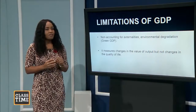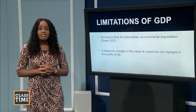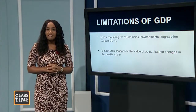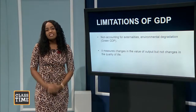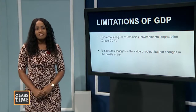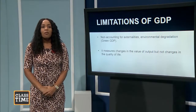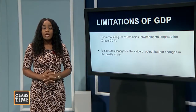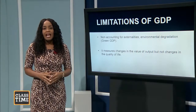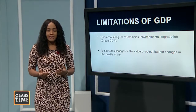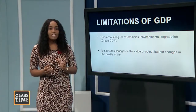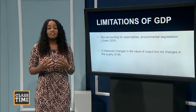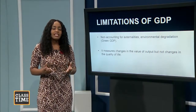Another limitation is that while a country might be producing goods and services and experiencing economic growth, GDP does not reflect what's happening in the environment. A country could be booming in production while simultaneously causing air pollution, polluting rivers and streams, and creating other problems — and GDP will not reflect that. The final limitation we'll mention is that GDP does not give a good indicator of changes in the quality of life being lived by individuals in a country.